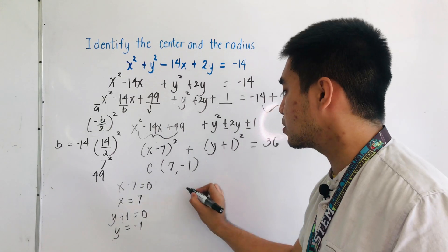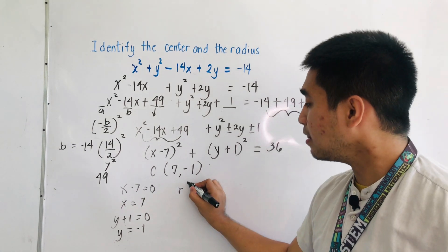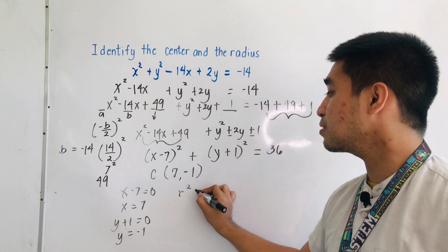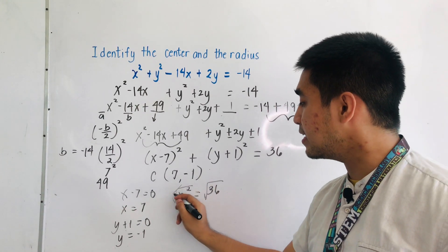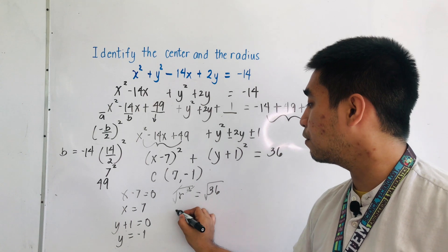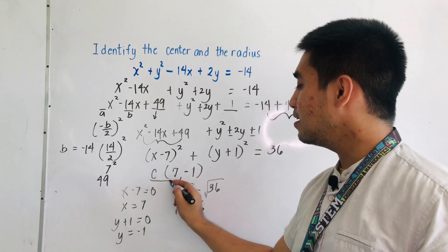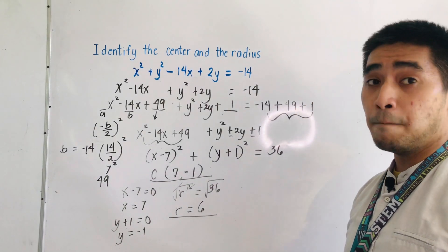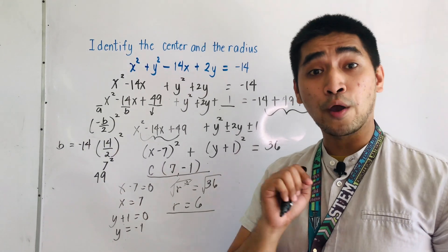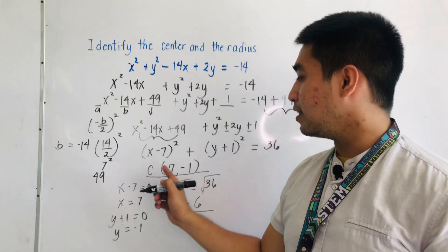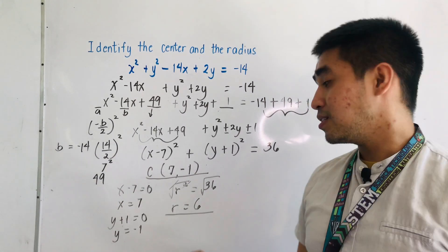How about the radius? Always remember that the right side equals r squared. So r squared is equal to 36. Taking the square root of both sides, r is equal to 6. Here is the final answer to the problem: for the equation x squared plus y squared minus 14x plus 2y equals negative 14, the center is located at (7, negative 1) and the radius is equal to 6 units.